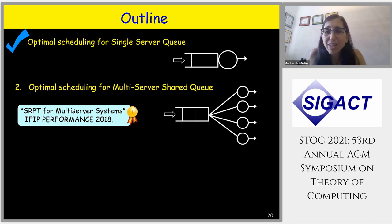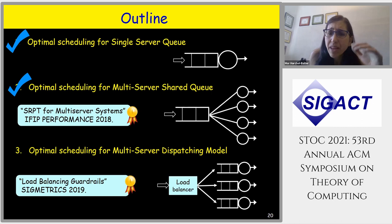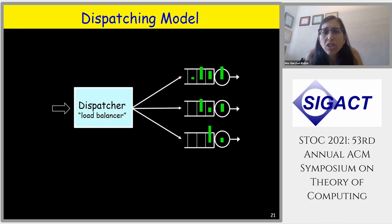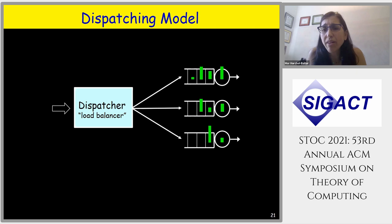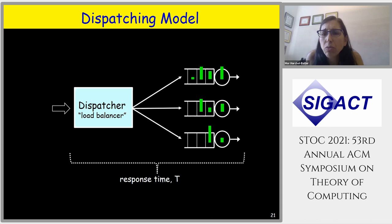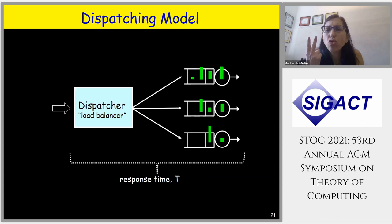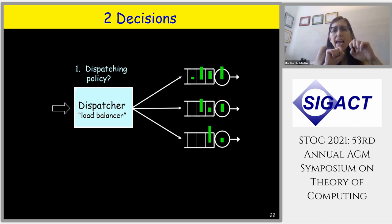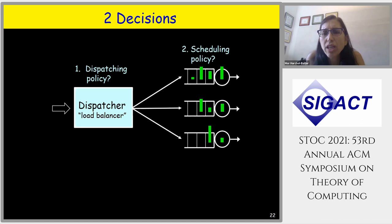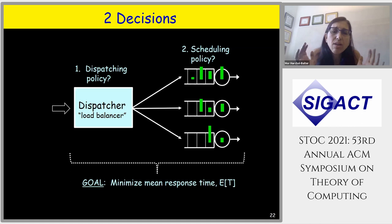Now let's look at the dispatching model. In dispatching, a job comes in and must immediately be sent to one of the queues — companies prefer this model because they don't want to hold on to all jobs. We again look at mean response time and have two decision points: first, how should we dispatch (what dispatching policy)? Second, once jobs are at a server, how should we schedule within that server?